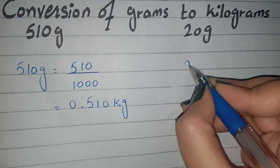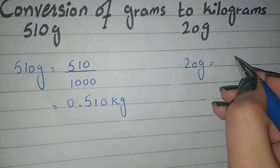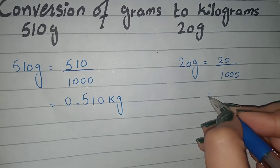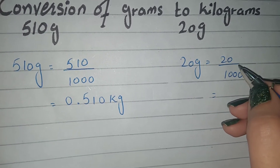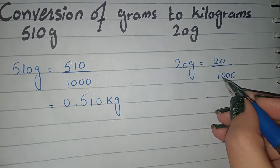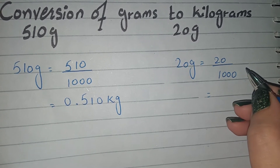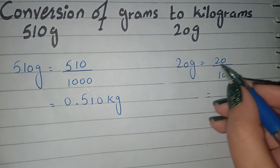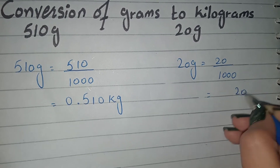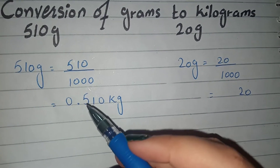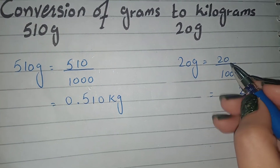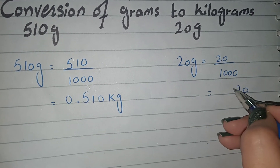Now we have 20 grams to convert into kg. We will divide by 1000. Here we have 3 zeros, so we need 3 decimal places. We have 2 digits, so we write 0 and 2, creating 3 decimal places.